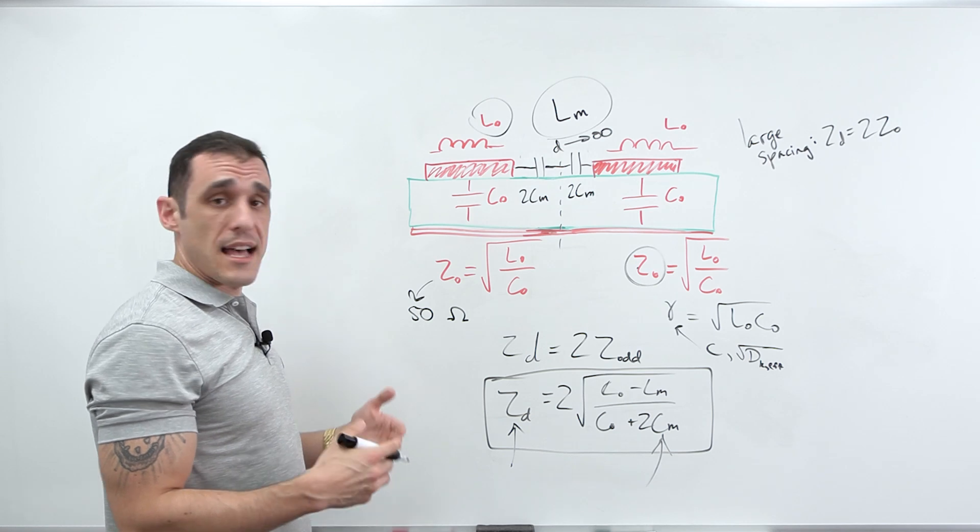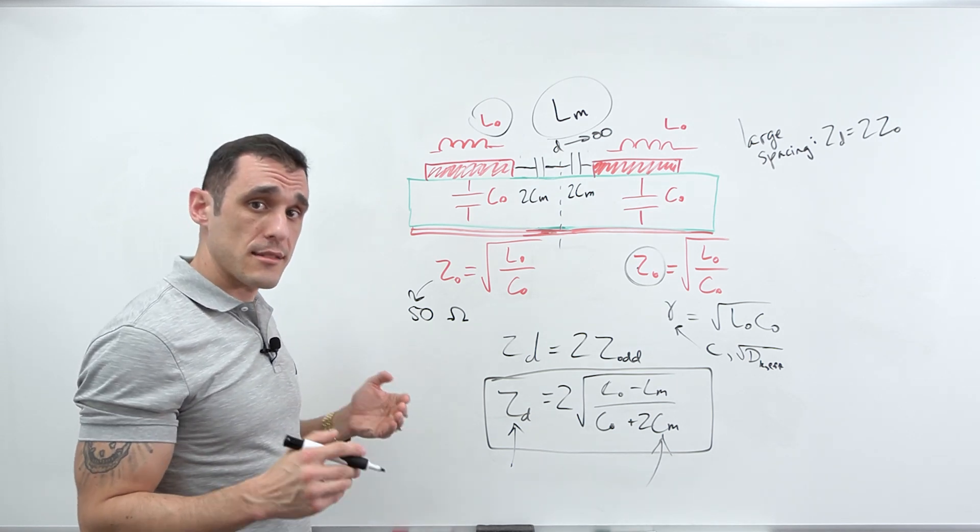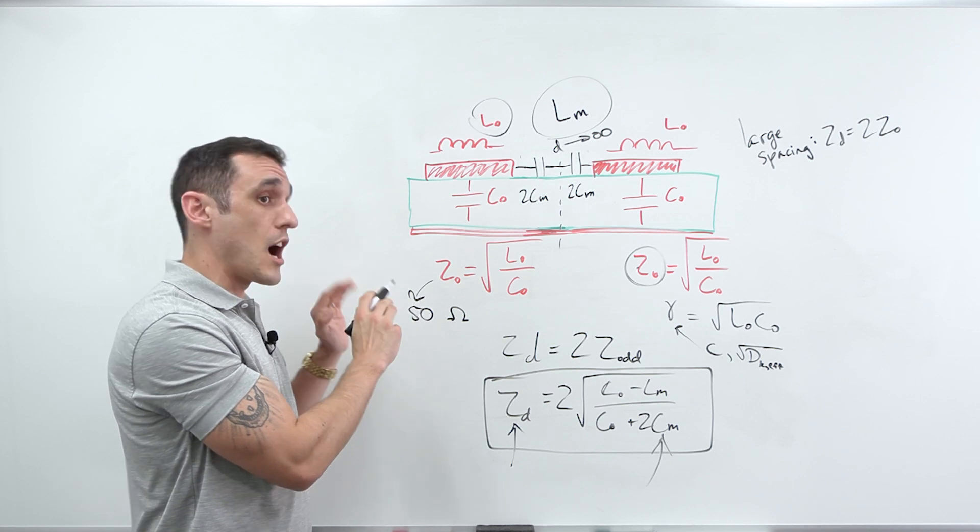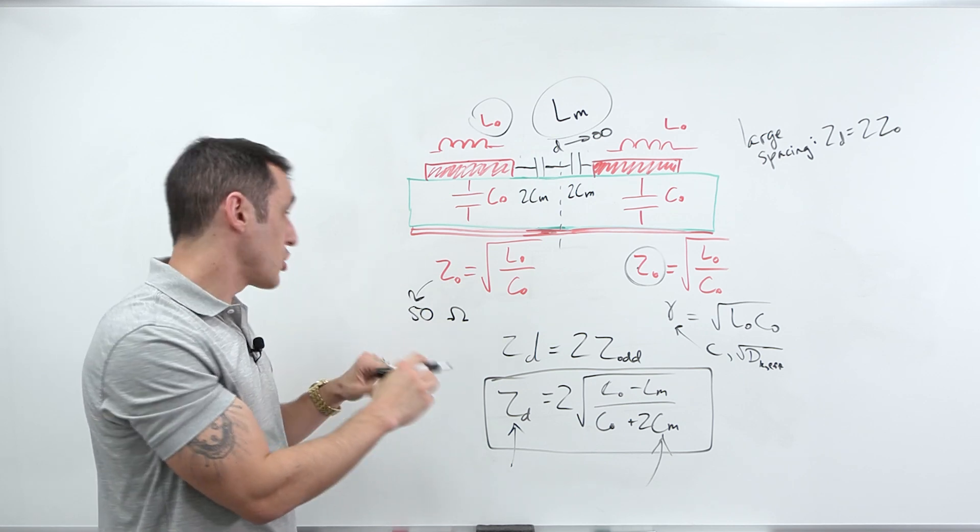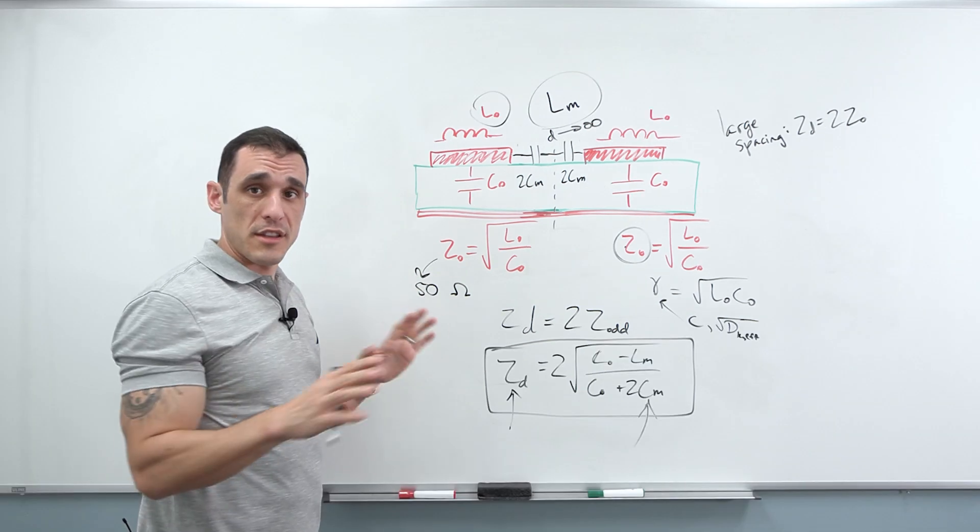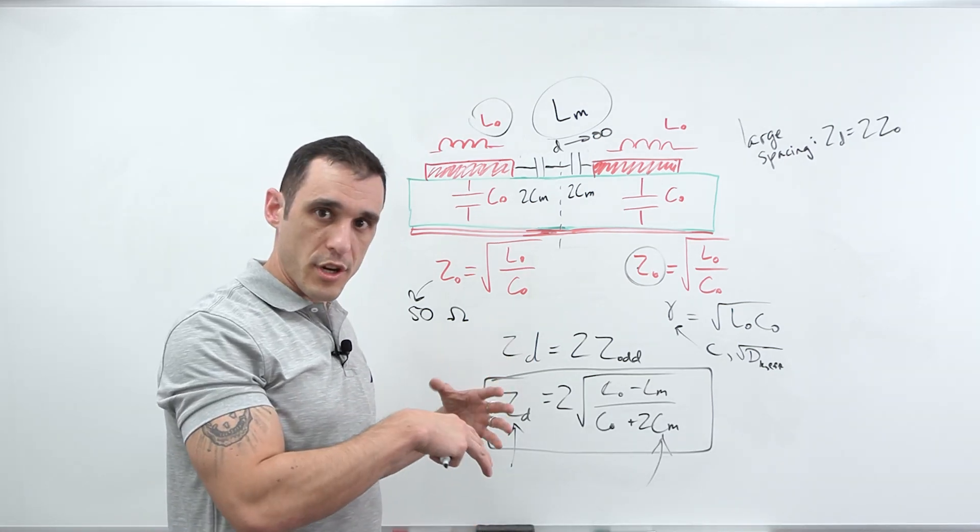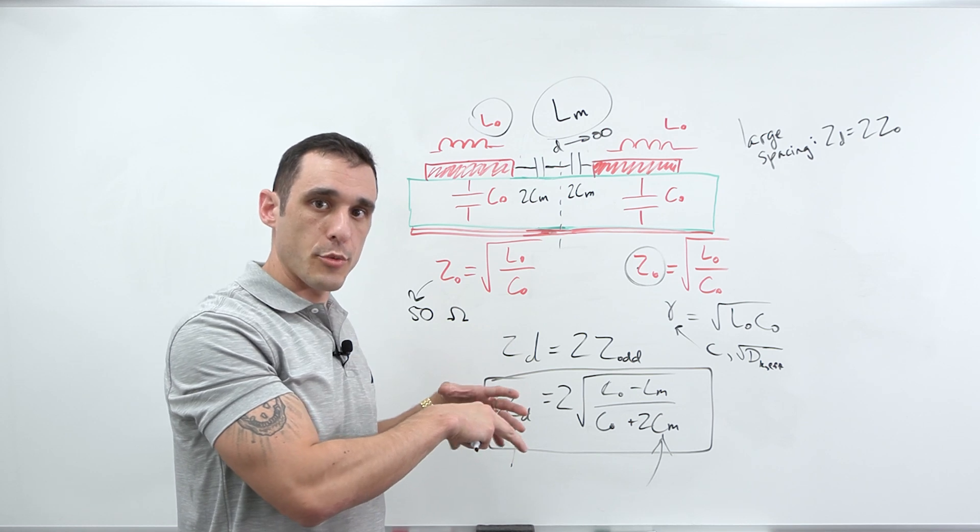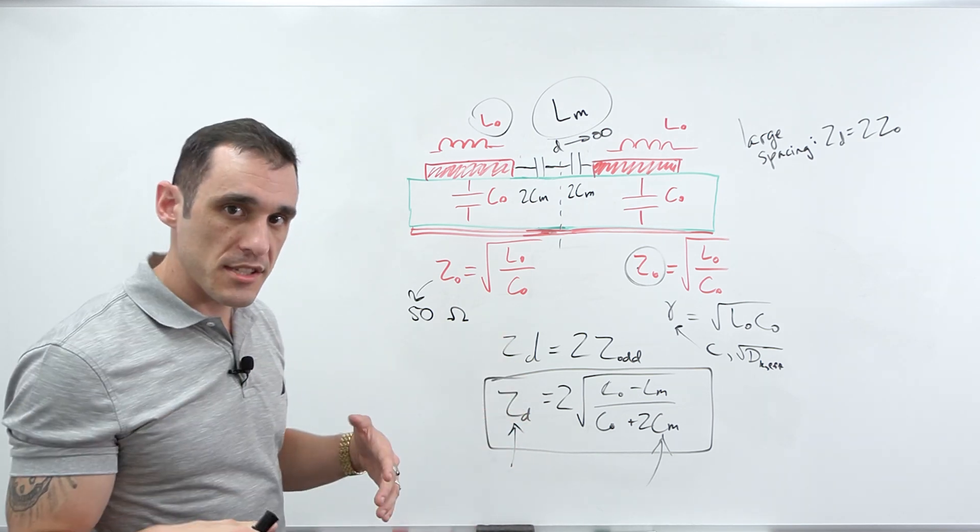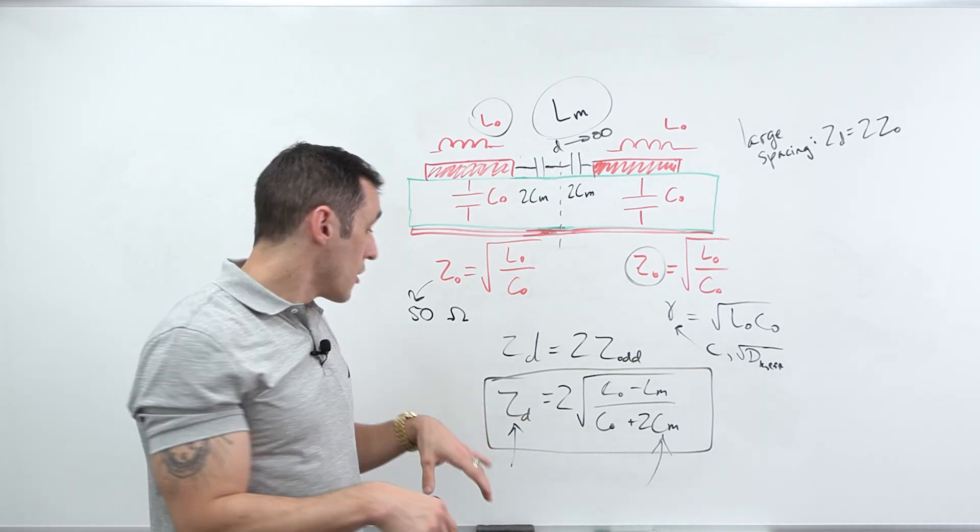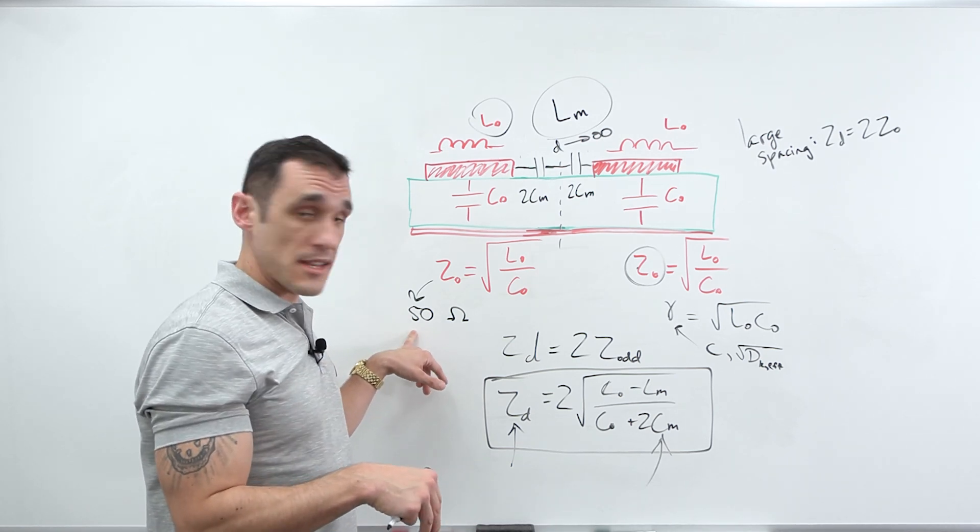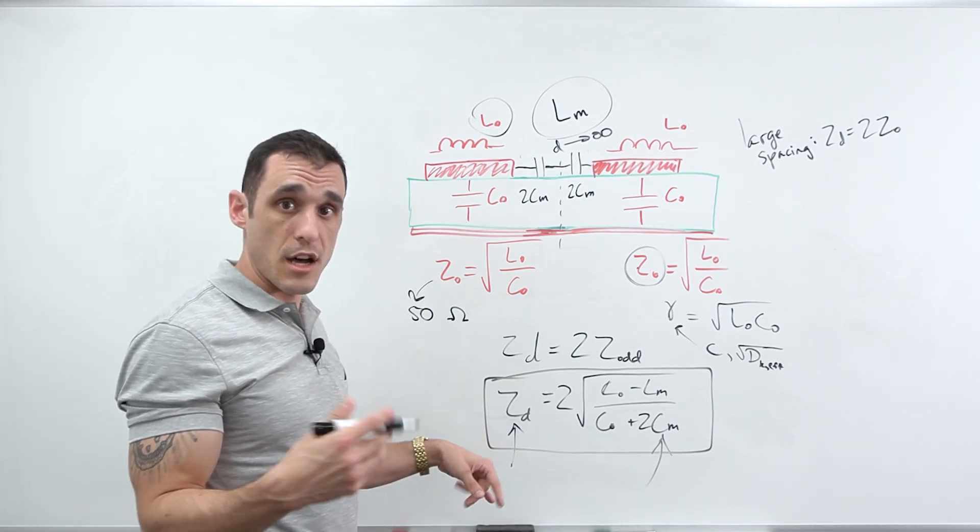DDR actually has configurable drive strengths and the single ended impedance is not going to be necessarily 50 ohms. It could be 34, it could be 40. It all depends on the drive strength. So that can be configurable on the chip. And so whatever chips you're working with and whatever processor you're working with, just make sure to read the data sheets to see what your allowed values are for your single ended impedance and then for the differential impedance for the clock and strobe signals.